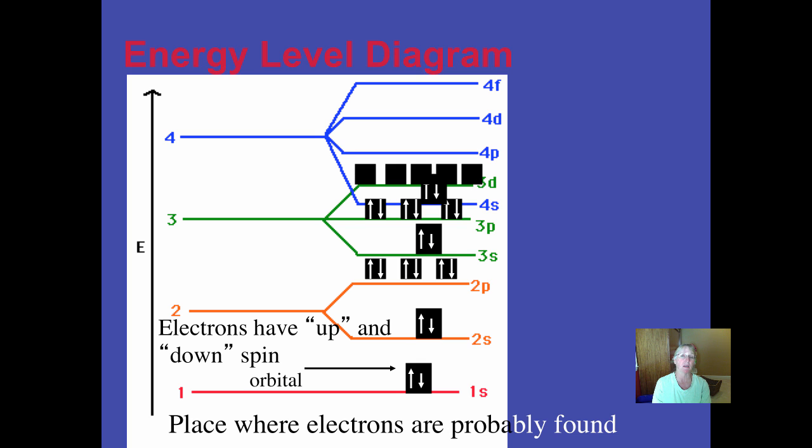Notice by the time you get to the d kind of orbitals, five are possible. Each can hold a maximum of two, so they would go in, spinning one at a time, and only if I have enough electrons would I come back and double up. If I stopped here, I could figure out what element this is.